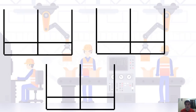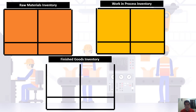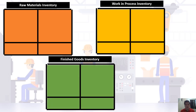Since we already have an idea of how the manufacturing process works from the visual presentation, let's proceed to the main objective: the preparation of the cost of goods manufactured report or cost of goods sold report. As mentioned, we have three major inventory accounts — raw materials inventory, work in process inventory, and finished goods inventory. Let's use boxes to represent the content of the cost of goods manufactured or cost of goods sold statement.